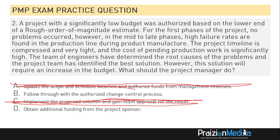There's also loquacious babble in this question: the team of engineers have determined the root causes and the project team has identified the best solution — they identified the best solution, so why do you need to gain approval if they were already part of it? The story doesn't add up. Option D says obtain additional funding from the sponsor — you do get additional funding, but you don't just walk up to the sponsor and say give me more money. You need to follow through with the approved change control process. It's the most vanilla-flavored answer, but it's the best and most correct because every organization has their own way they manage change.